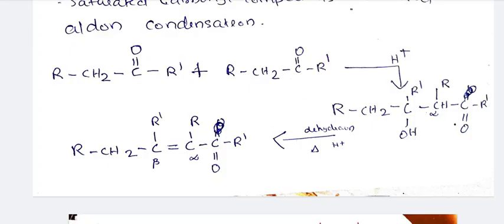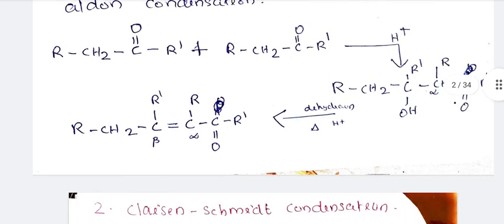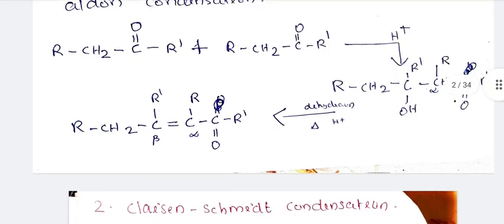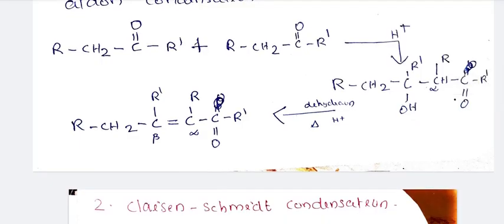Take RCH₂COR' — that is an aldehyde or ketone. We have two such compounds. The carbonyl group has a double bond O, and on the alpha carbon there is a negative charge formed. Then we add another mole of CH₂COR'.